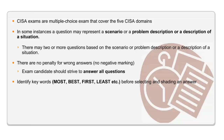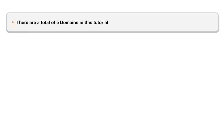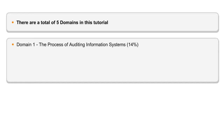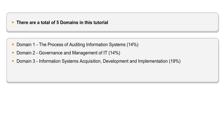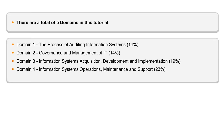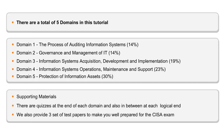This tutorial covers five domains as per the syllabus provided by ISACA: Domain 1, The Process of Auditing Information Systems; Domain 2, Governance and Management of IT; Domain 3, Information Systems Acquisition, Development and Implementation; Domain 4, Information Systems Operations, Maintenance and Support; Domain 5, Protection of Information Assets. This tutorial will also consist of quizzes as we progress, and three test papers for checking your knowledge and skills.